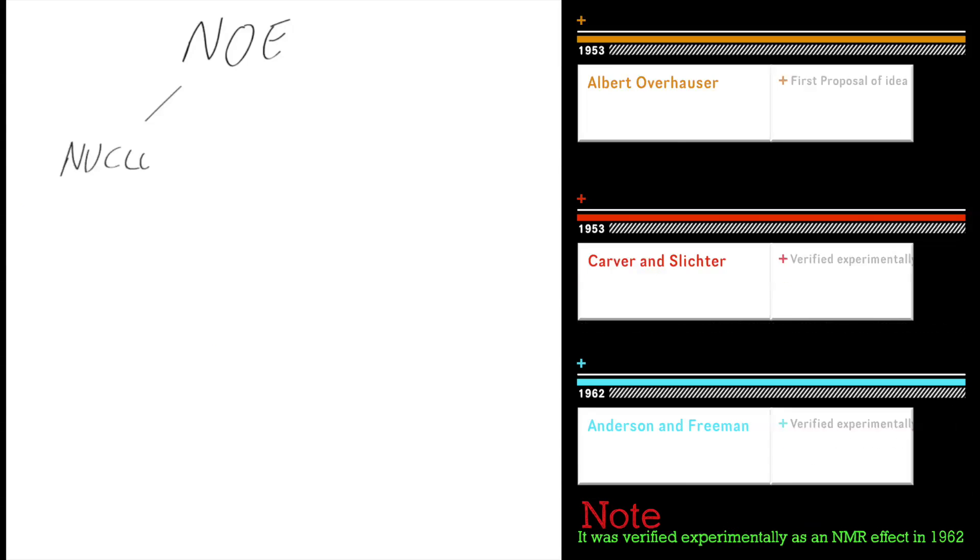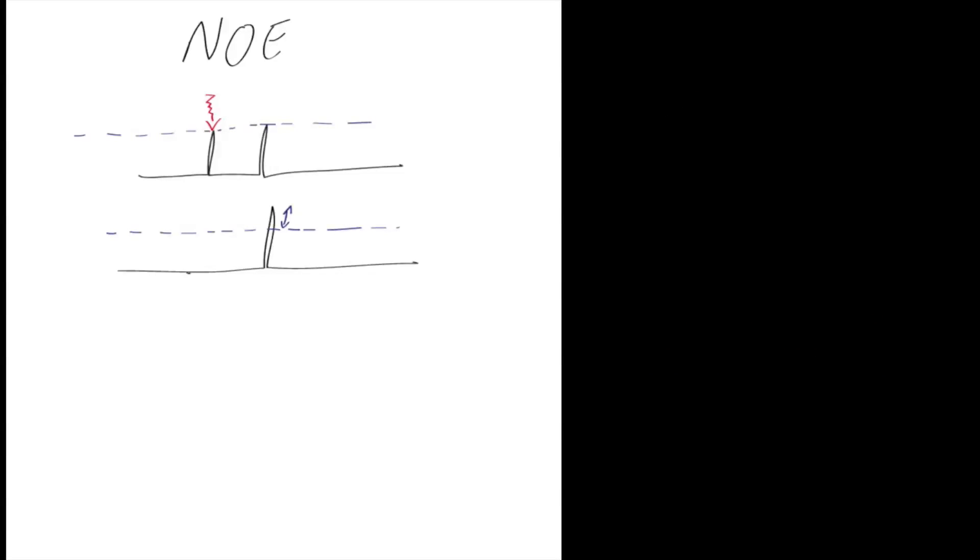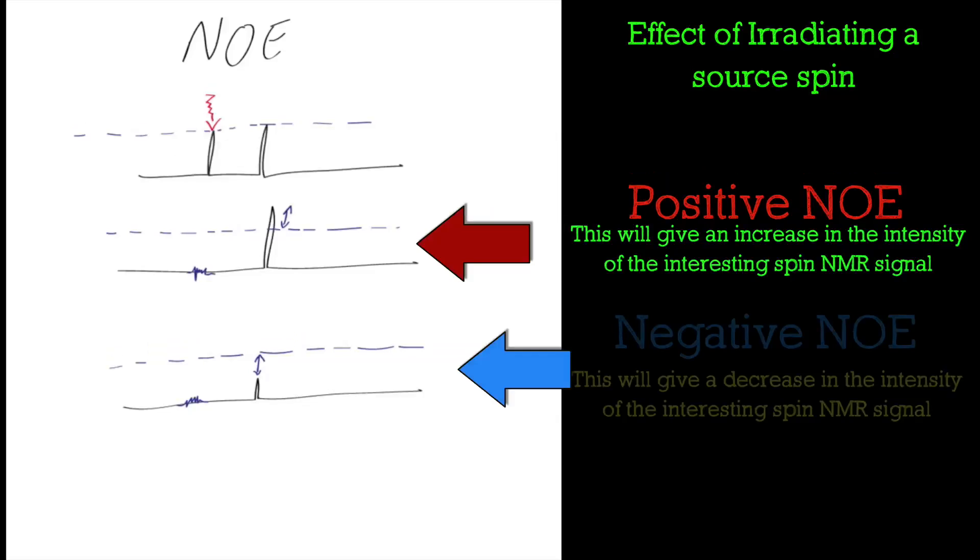Now NOE stands for Nuclear Overhauser Effect, named after Albert Overhauser. Basically if we take an NMR spectrum and we try to irradiate a particular proton, then as that proton disappears because it's been brought to resonance, anything within the vicinity of it will get this Nuclear Overhauser Enhancement or Effect.